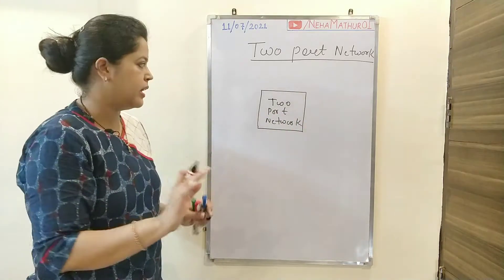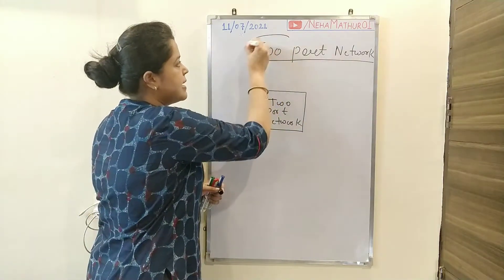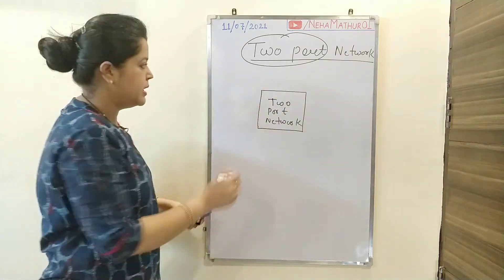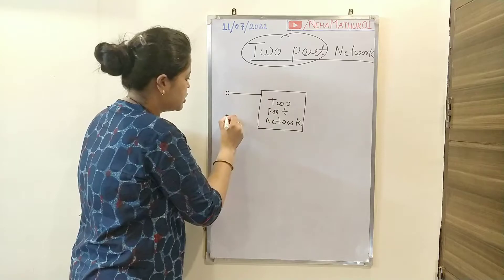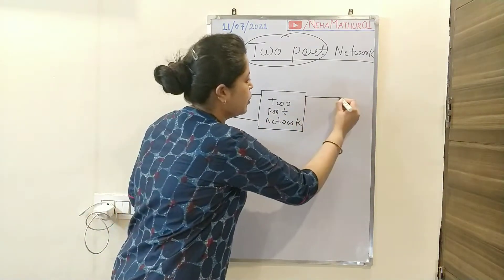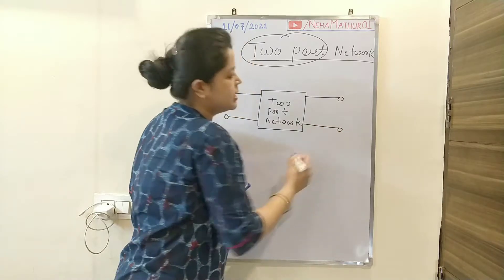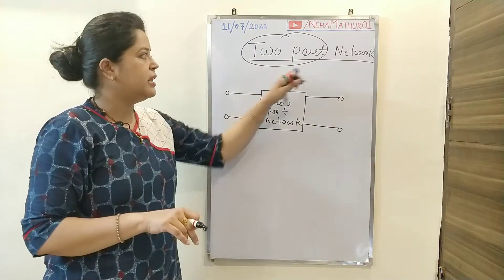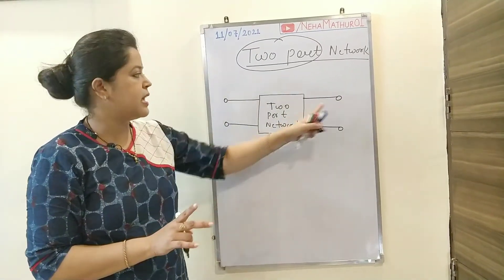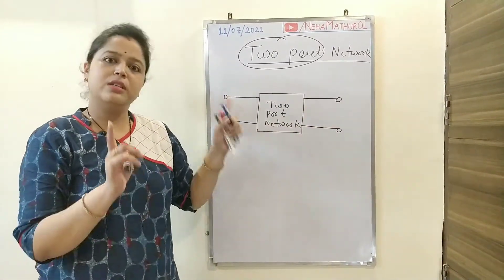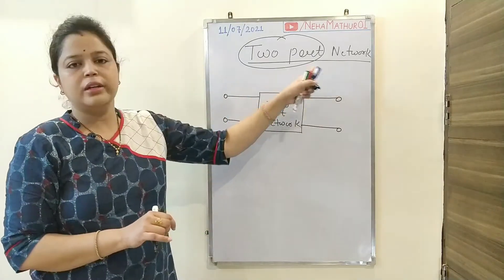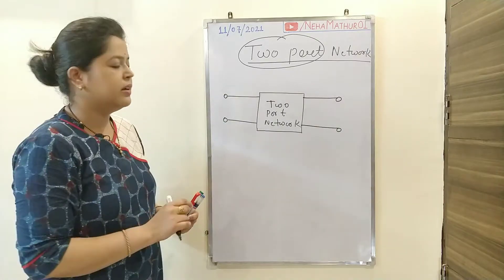The name itself indicates that the particular network will have two ports. One port is treated as an input port while the other port is treated as an output port. Any network in which we have two ports — one as input and one as output — falls under the category of two-port networks.